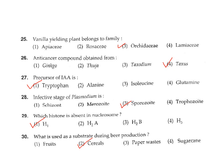Question 30: What is used as a substrate for beer production? For beer production, cereals are used — such as barley, maize, and similar grains. Correct answer Option 2.